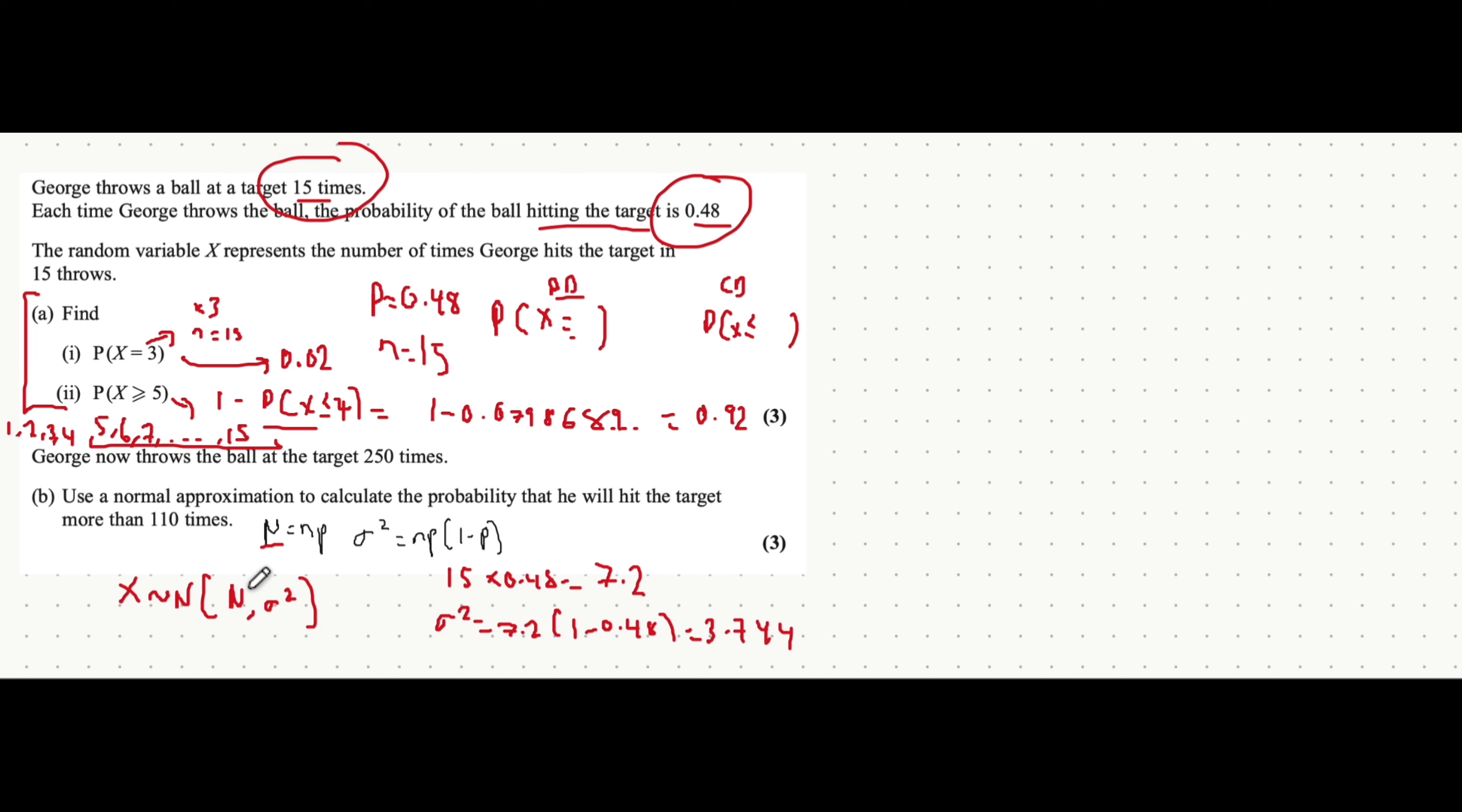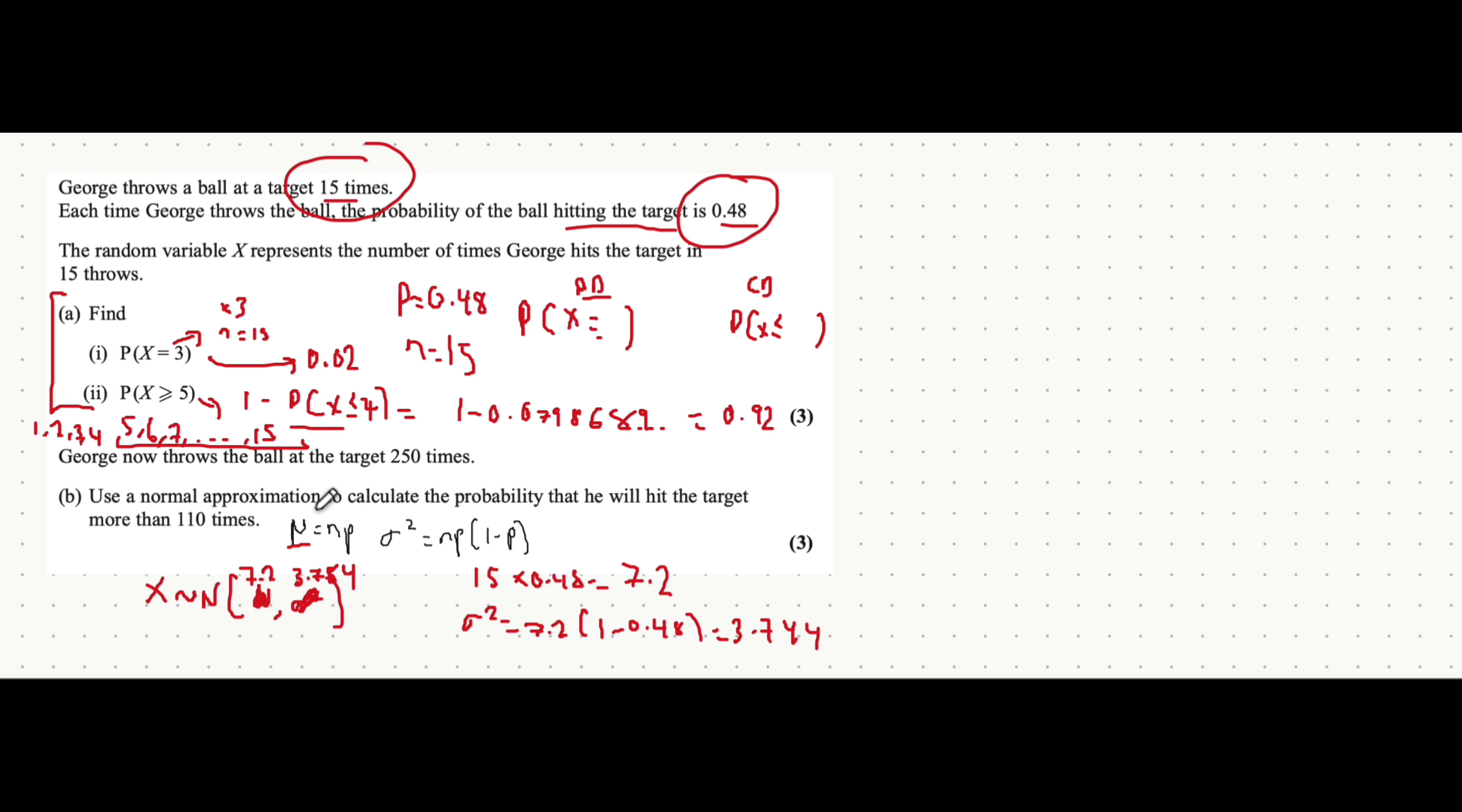So essentially, we can replace this mu with 7.2. And the square of the standard deviation or the variance was 3.744. Now that we've got those, we can actually find the normal approximation.